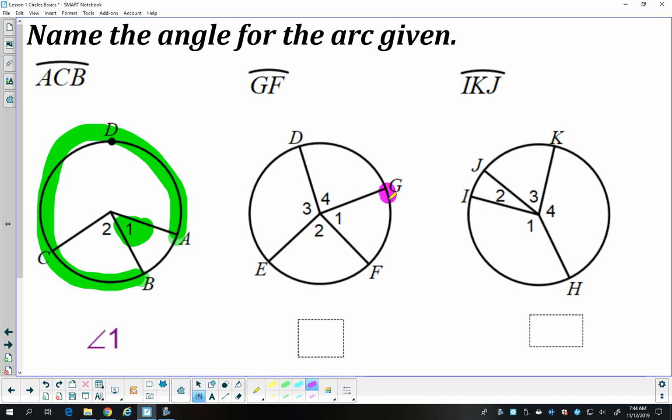Arc GF is a minor arc. Starts at G, ends at F. That's also angle 1. And then IKJ starts at I, goes towards K, and ends at J. So it's a little confusing. I could go this way towards K, but I have to look at the whole name and see that I need to end at J. So the only way to start at I and end at J by passing K would be to go this way. That's a major arc for angle number 2.